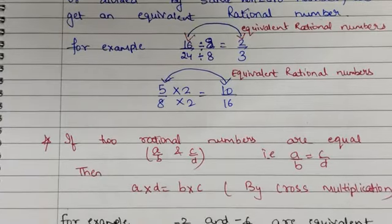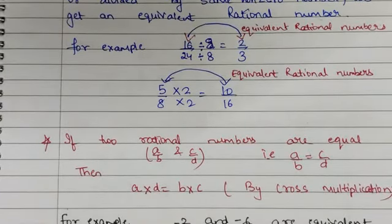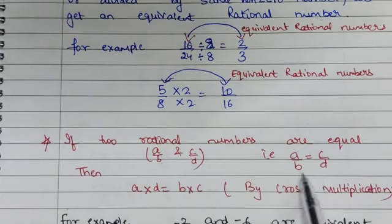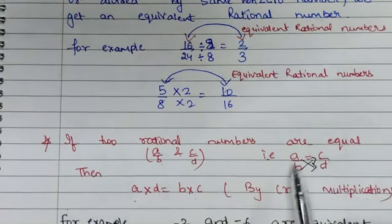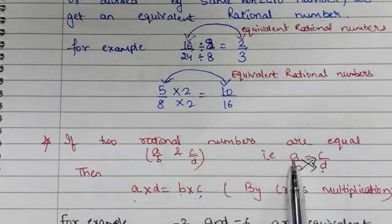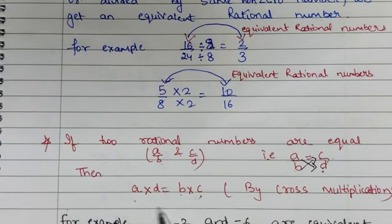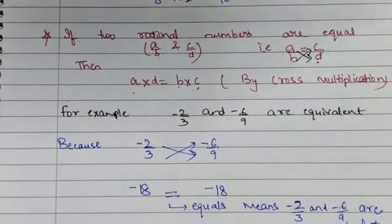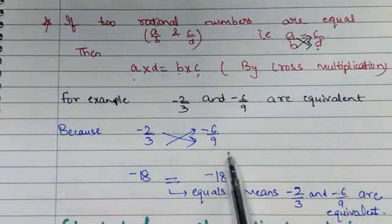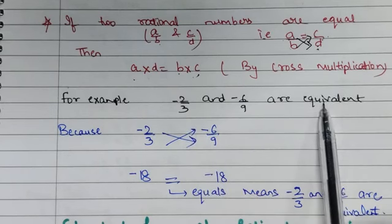If two rational numbers A upon B and C upon D are equal, then by cross multiplication we can write A into D equals B into C. It means if two fractions are equal, their cross products are equal. For example, suppose we have to check whether minus 2 by 3 and minus 6 by 9 are equivalent — we can check with the help of cross multiplication.